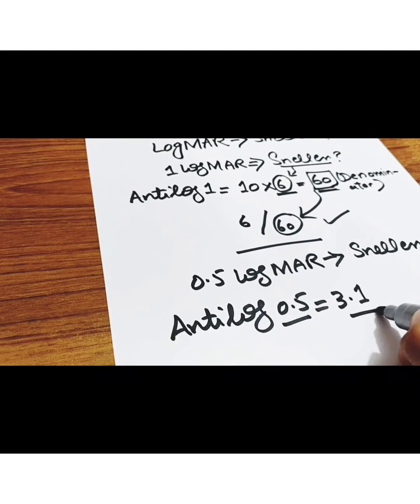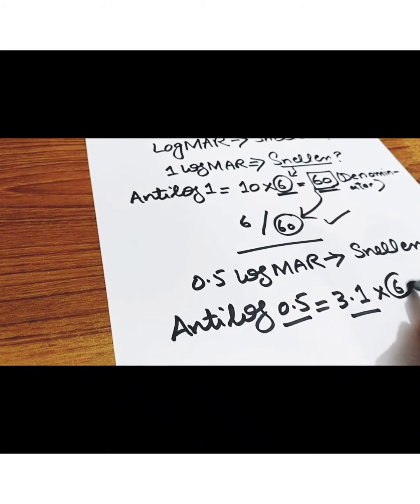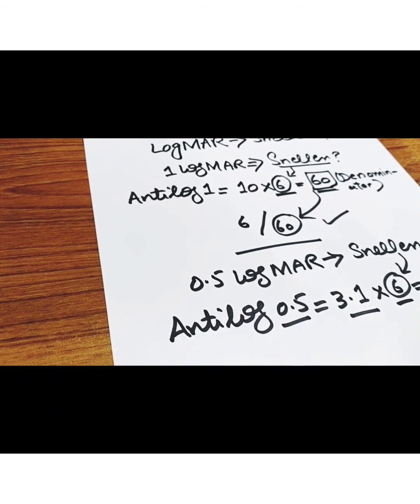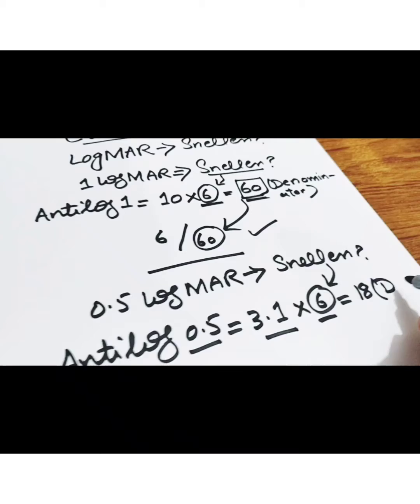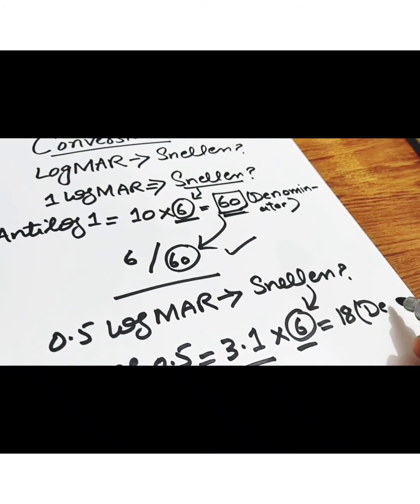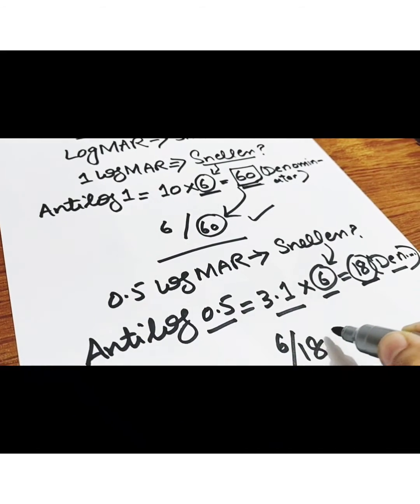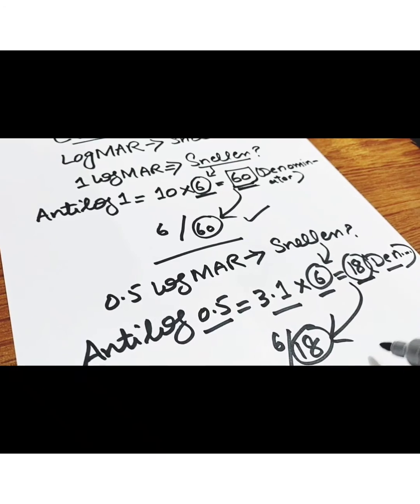3.1 multiplied by 6, that is constant 6 meters of Snellen, will be 18. 18 will be the denominator of 6 by 18 reading. 6 is constant, so 6 by 18, where 6 is constant, 18 is variable, and that is the denominator: 6 by 18.